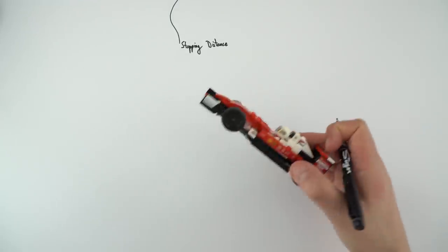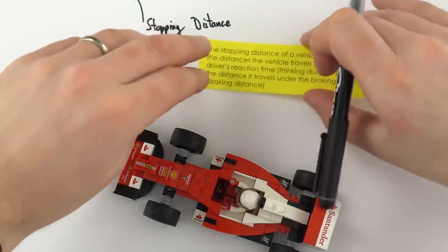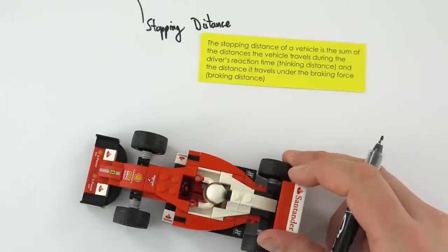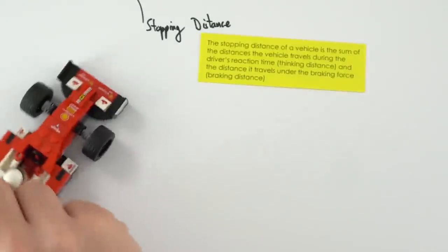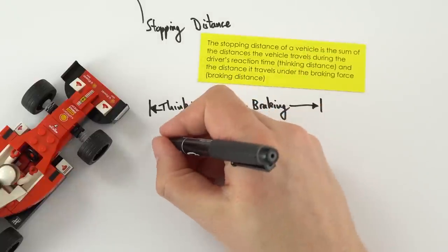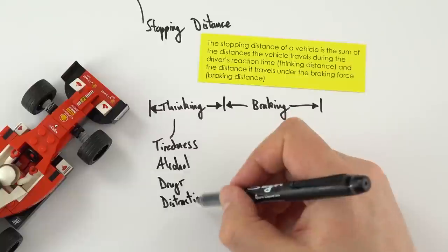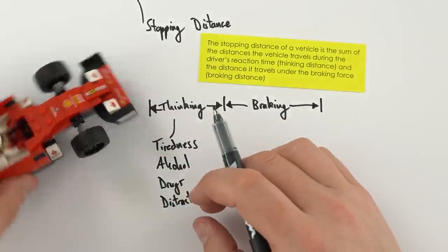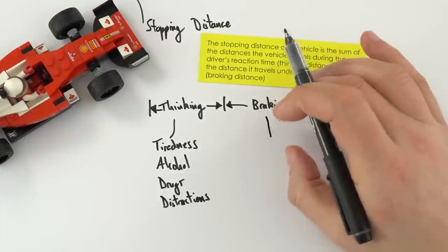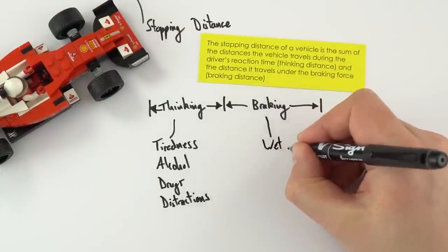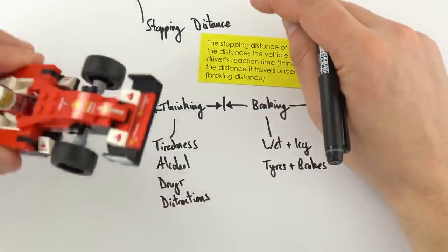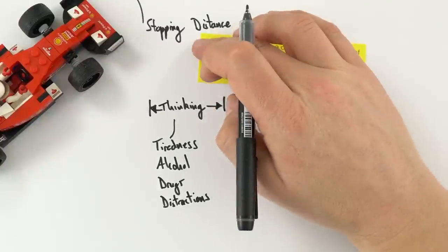The stopping distance for a vehicle is the total distance it travels, including the driver's thinking distance — affected by tiredness, alcohol, drugs, and distractions like mobile phones — and the braking distance. Braking distance is affected by road conditions (wet or icy), condition of tyres and brakes. Both thinking distance and braking distance increase with speed: the faster you're going, the bigger the total stopping distance.